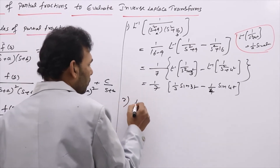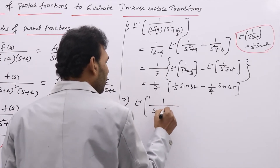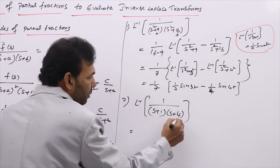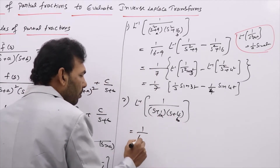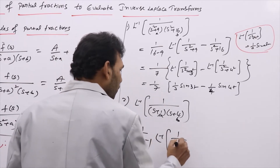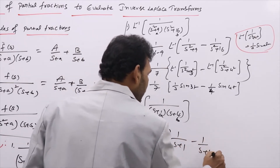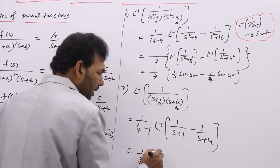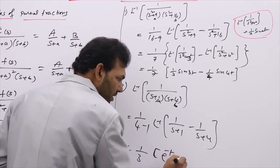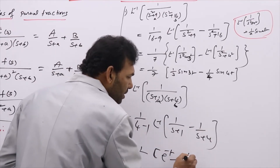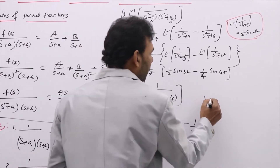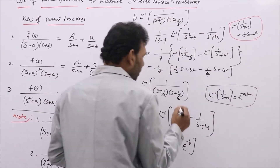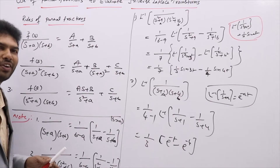Similarly, to evaluate L⁻¹{1/[(s+1)(s+4)]}, use the same shortcut model: treat 4 as b and 1 as a, giving 1/(4−1) times L⁻¹{1/(s+1) − 1/(s+4)}. Using the formula L⁻¹{1/(s+a)} = e^(−at), the answer is (1/3)[e^(−t) − e^(−4t)]. So for these special forms we can evaluate very quickly without full partial fractions.